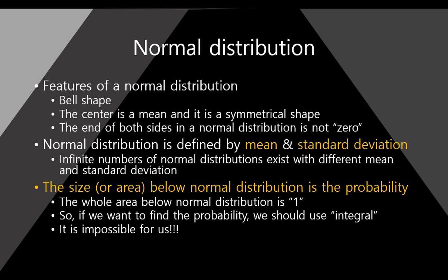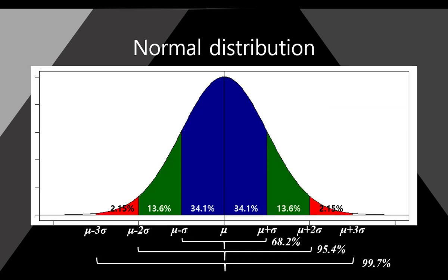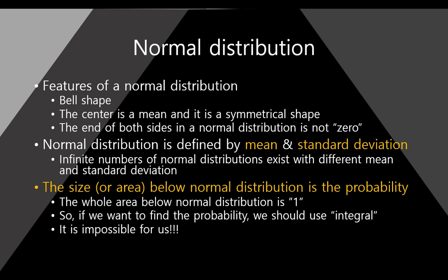Normal distribution is defined by a mean and standard deviation. Because, as you can see here, we just need to know two pieces of information — that is, mean and standard deviation. If you have any values for mean and standard deviation, you can draw a normal distribution with some statistical software. And because of these features, we have infinite numbers of normal distributions with different values of mean and standard deviation.